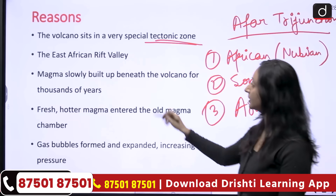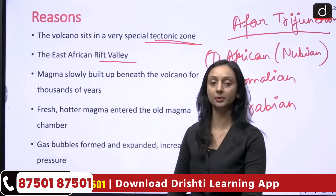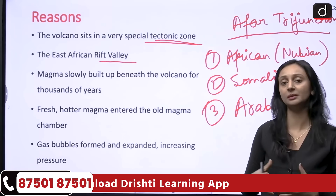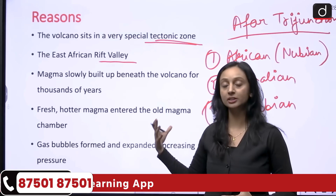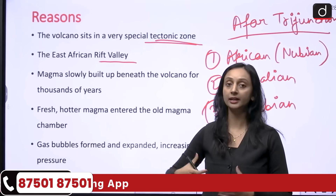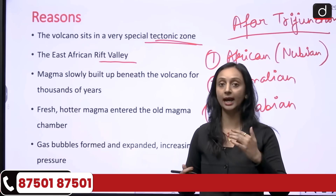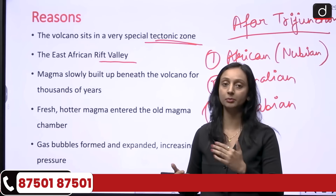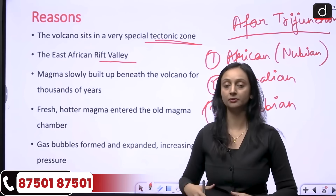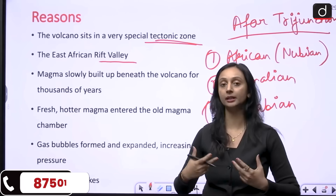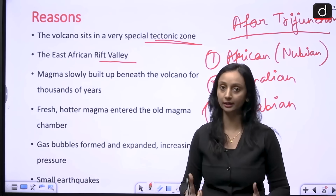Next, the East African Rift Valley is also present very close to Haley-Kappi. The rift valley is basically breaking the African continent into two parts, creating another divergent boundary where the earth's crust is becoming thin. Since Haley-Kappi is located in proximity to the East African Rift Valley, it gets easier for the magma within to come out and erupt.